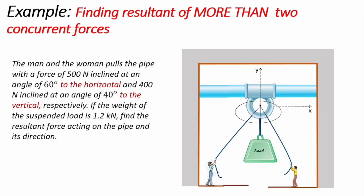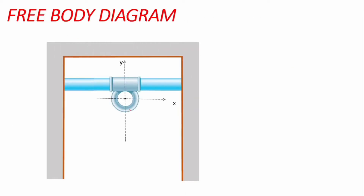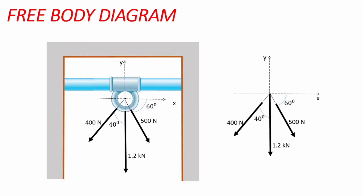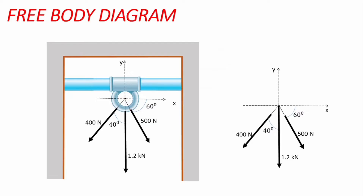The man pulls the pipe with a force of 500 newtons inclined at an angle of 60 degrees to the horizontal, and the woman pulls with 400 newtons inclined at an angle of 40 degrees to the vertical. We need a free body diagram: we represent the man with 500 newtons at 60° to the horizontal, the woman with 400 newtons at 40° to the vertical, and there is a suspended weight of 1.2 kilonewtons. These forces can be represented using a particle showing all forces and their directions.